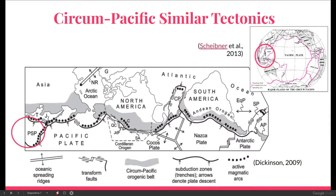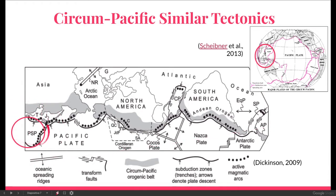Now let me talk about the circumpacific tectonics and some similar cases. In the upper right map we can see the globe and Southeast Asia, and in the lower left map we have a different projection centred on a great circle that goes from Taiwan to the Scotia Arc. The nice thing about this projection is that we can see the circumpacific orogenic belt highlighted in grey. Let's look at some of the regions I'm going to compare with East Indonesia in the following slides.